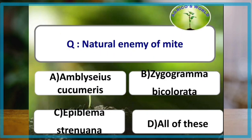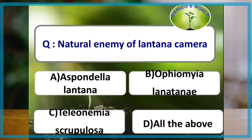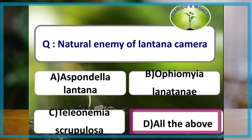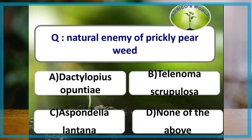The natural enemy of mite is Amblyseius cucumeris. Natural enemies of lantana camera are Asbondella lantana, Ophiomyia lantanae, and Teleonemia scrupulosa — all three are natural enemies of lantana camera. The natural enemy of prickly pear weed Opuntia dillenii is Dactylopius opuntiae.